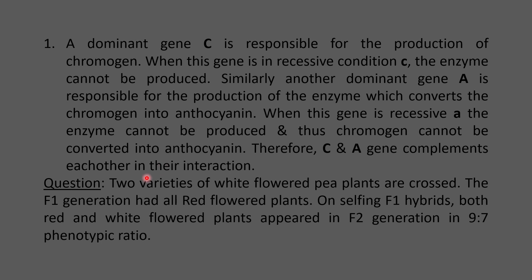Two varieties of white-flowered pea plants are crossed — both parents are white-flowered but of different genetic constitution. The F1 generation had all red-flowered plants. On selfing these F1 red-flowered plants, both red and white-flowered plants appeared in the F2 generation in the phenotypic ratio 9:7.